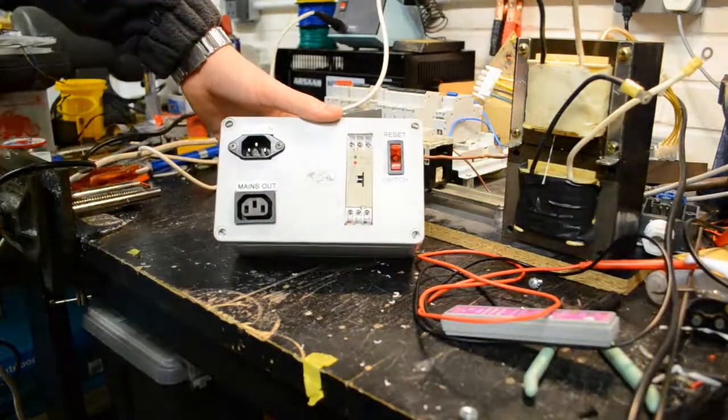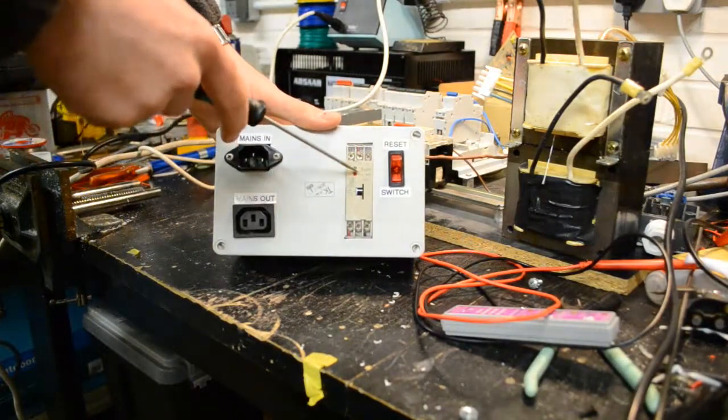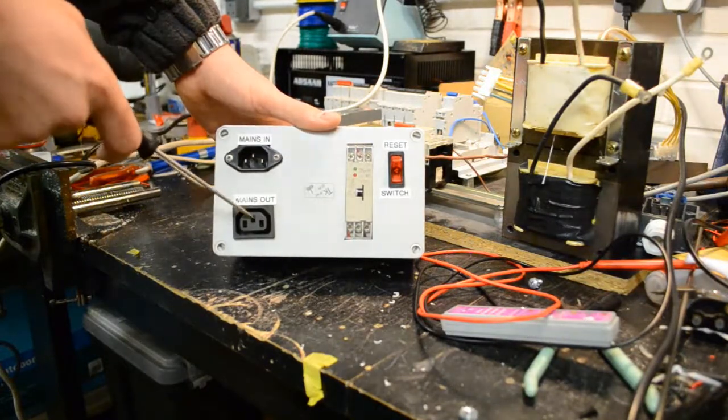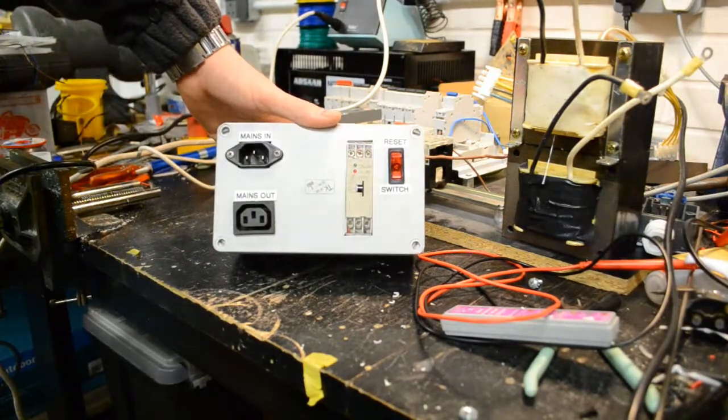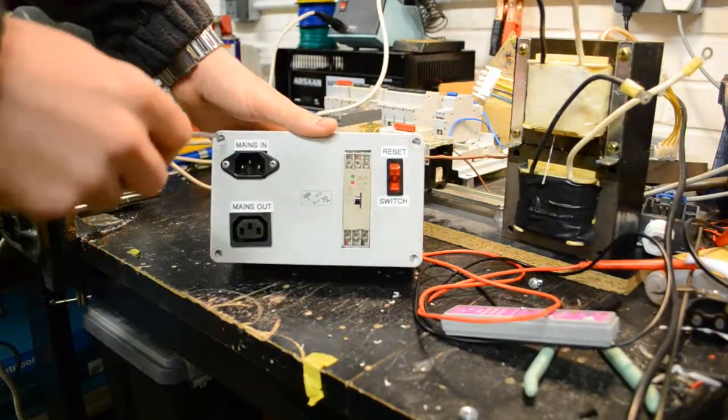Basically all it is, the mains power goes in here, there's just a relay inside controlled by that timer, and then it switches out to the mains output. Quite simple really. You've just got a reset switch on the end to reset the time.